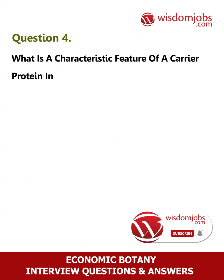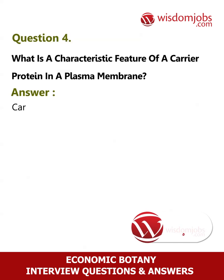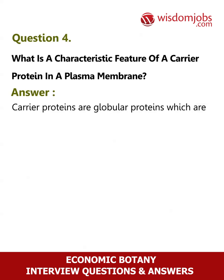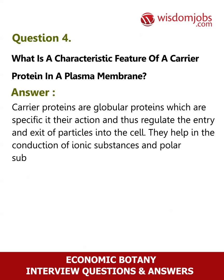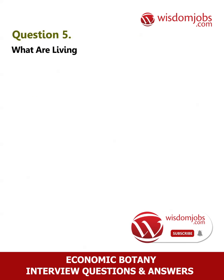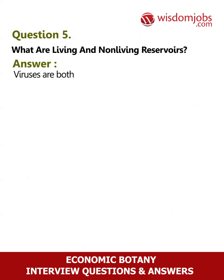Question 4: What is a characteristic feature of a carrier protein in a plasma membrane? Answer: Carrier proteins are globular proteins which are specific in their action, and thus regulate the entry and exit of particles into the cell. They help in the conduction of ionic substances and polar substances.